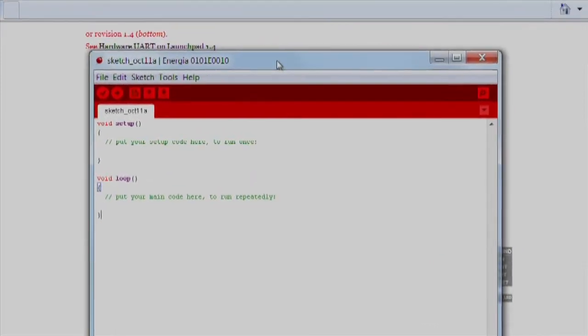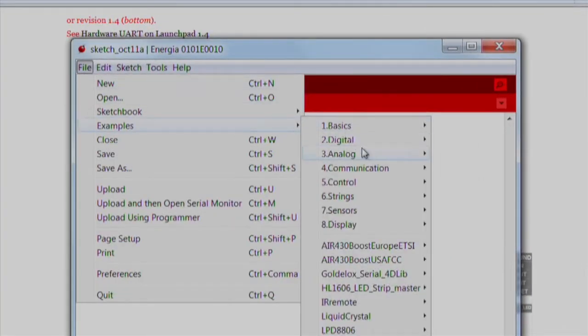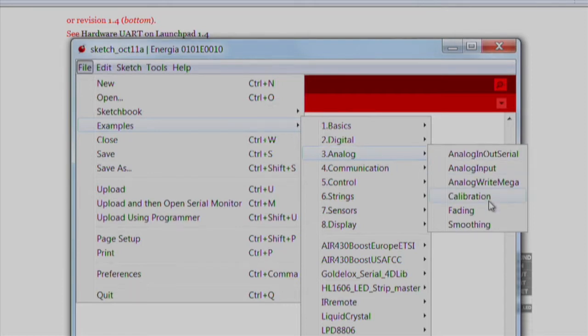Next, let's open up Energia. We'll import an existing code example by going to File, Examples, Analog, Calibration.